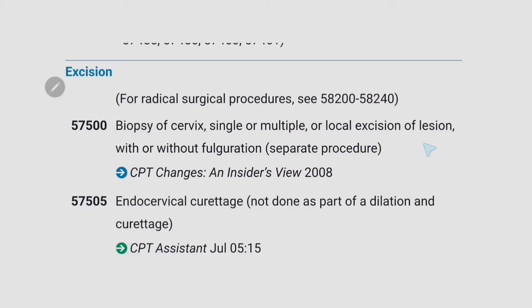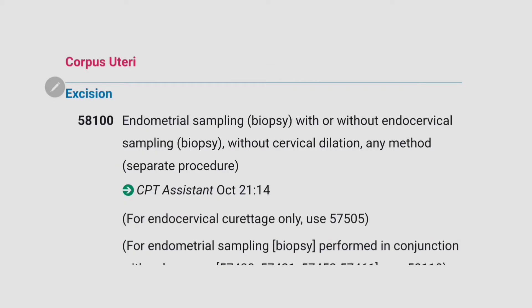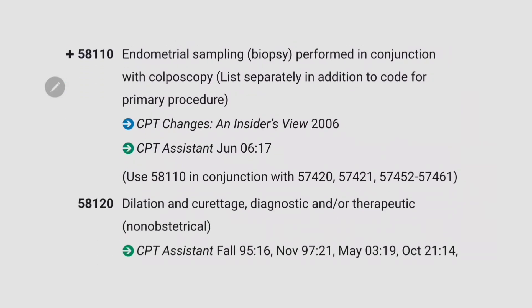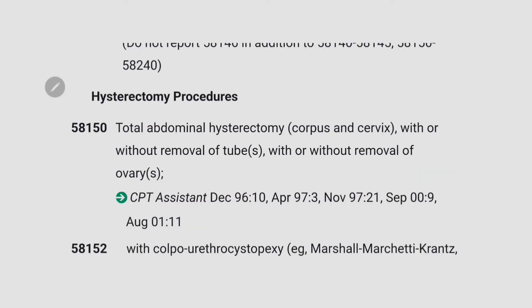Next important codes are for excision — biopsy of cervix, single or multiple, or local excision of lesion with or without fulguration; this is a separate procedure. 57505 is for endocervical curettage not done as part of dilation and curettage — highlight this. Next important code is corpus uteri excision: 58120 for dilation and curettage, diagnostic or therapeutic, non-obstetrical — highlight the term non-obstetrical.